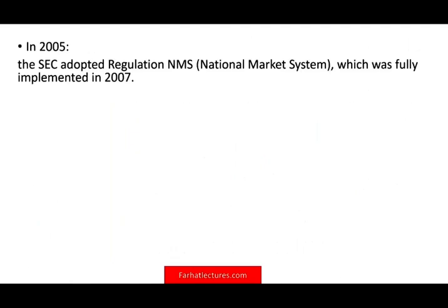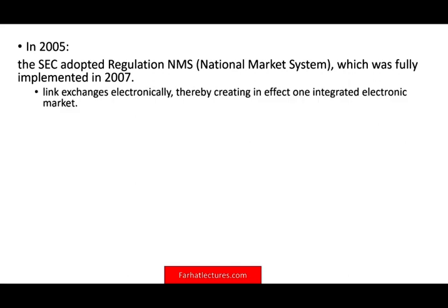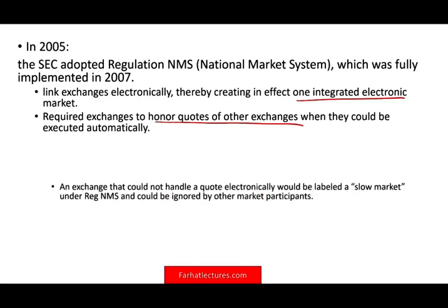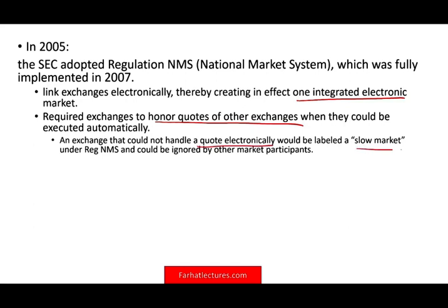In 2005, the SEC adopted the regulation called the National Market System, which was fully implemented in 2007. This linked all the exchanges electronically, creating in effect one integrated electronic market. Exchanges were now required to honor quotes of other exchanges when they could execute automatically. Any exchange that could not handle a quote electronically would be labeled as a slow market and could be ignored by other market participants, incentivizing everyone to execute prices fairly quickly.